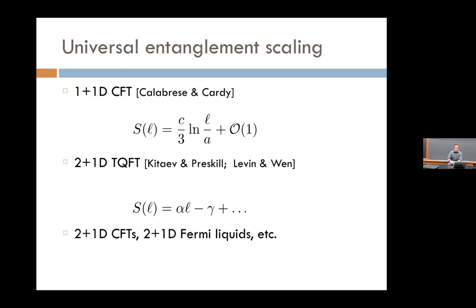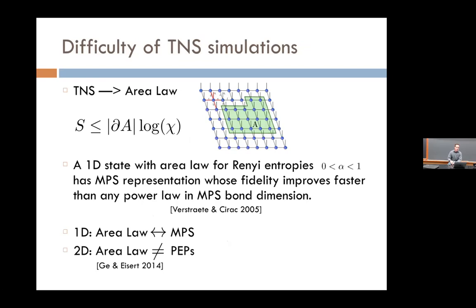For the entanglement of a segment of length L in a conformal field theory ground state, there's a logarithmic divergence whose pre-factor is the central charge. Entanglement here is both UV and IR divergent due to the L/a term. In a 2D gapped topological phase, cutting out a disc of radius L gives the area law part plus the sub-leading topological entanglement entropy gamma, detected by Kitaev-Preskill and Levin-Wen, which detects fractionalization such as anyonic quasiparticles.